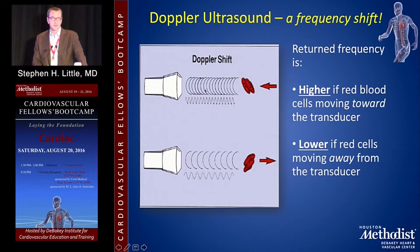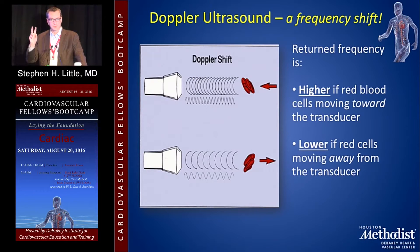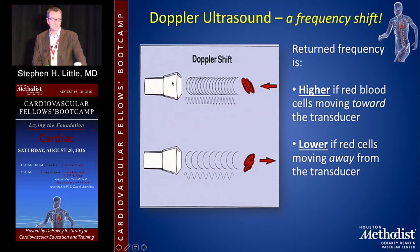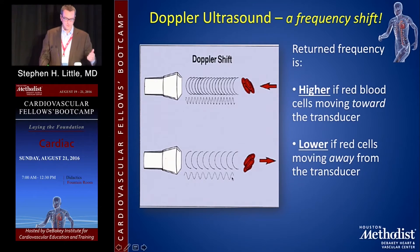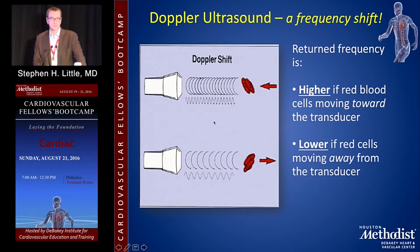Doppler shift is the big thing we use a lot. It tells you both the direction of blood flow and the velocity of blood flow. The ultrasound sends off a signal at one frequency; if red blood cells are moving towards the probe, the shift is towards the probe and it knows the target is moving that way. If the red cell is going away, the frequency shift is in the other direction and gets lower. So direction and velocity are the two main outputs.